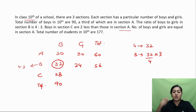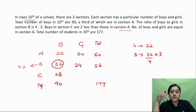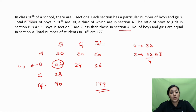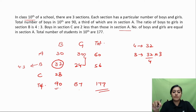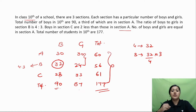32 plus 24 gives a total of 56 in Section B. We don't have girls in Section C directly, but total students in 10th are 177. Subtract total boys (90) from 177 to get 87 total girls. We already have girls in A and B, so subtract them from 87 to get 33 girls in Section C. 28 boys plus 33 girls gives a total of 61 students in Section C.